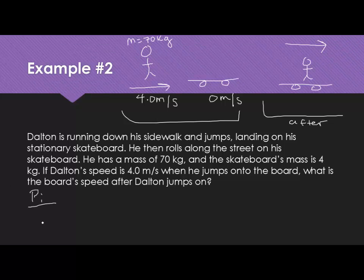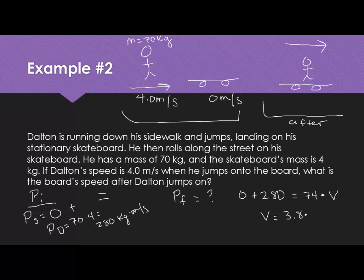Let's look at initial condition and then our final. Initially, the momentum of the skateboard is going to be 0. The skateboard is at rest. And then the momentum of Dalton is going to be 70 times 4, mass times velocity, which is 280. Final momentum, we're not sure what it is, but our initial has to equal our final. So 0 plus 280 has to equal the final momentum of him and the skateboard together. They are moving together as one object, so their masses are going to come together to be 74, and they're both going to go at some velocity V. When we divide both sides by 74, we get a velocity of 3.8 meters per second.